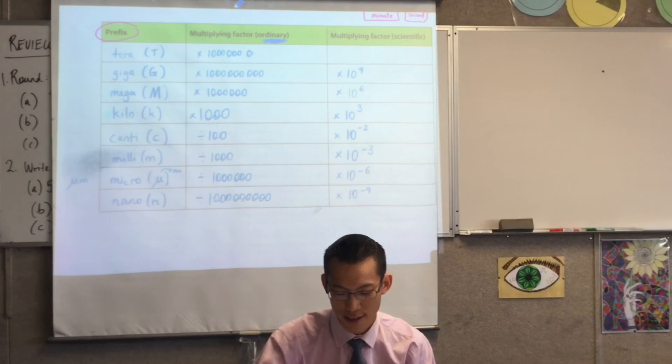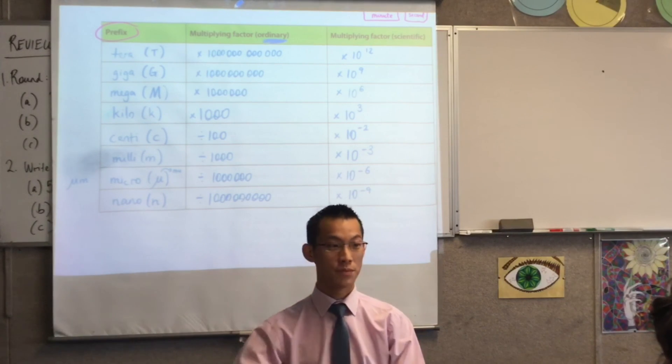So, one, two, three, four, five, six, seven, eight, nine, ten, eleven, twelve, which then tells you the accompanying scientific notation.